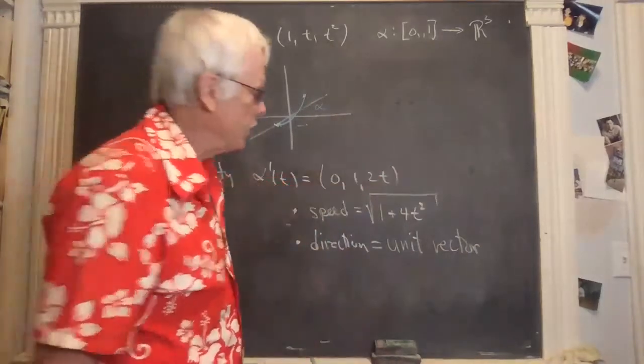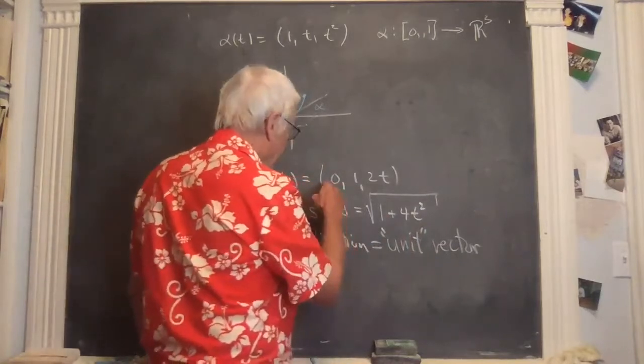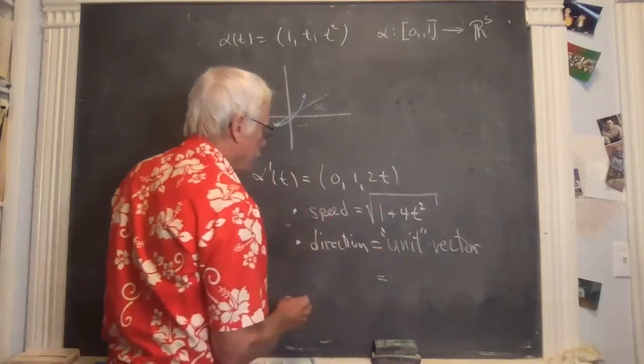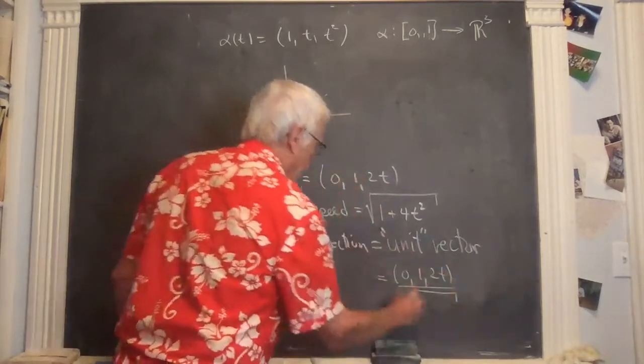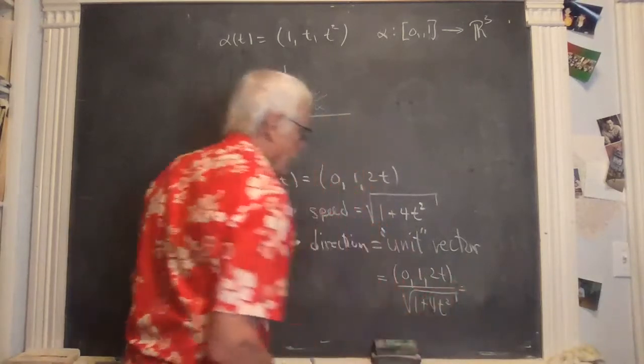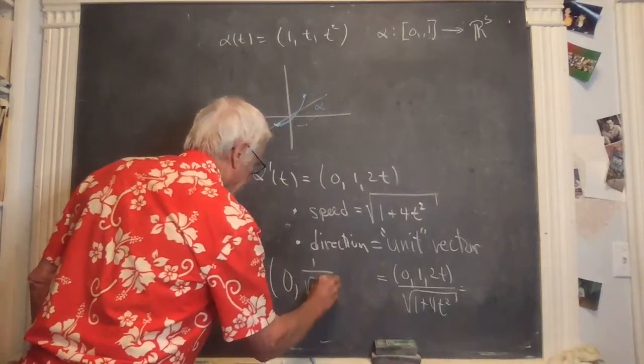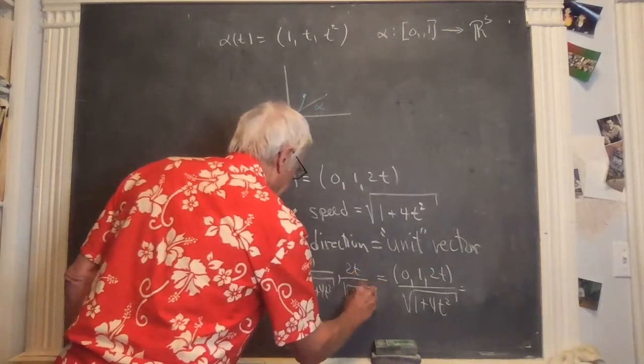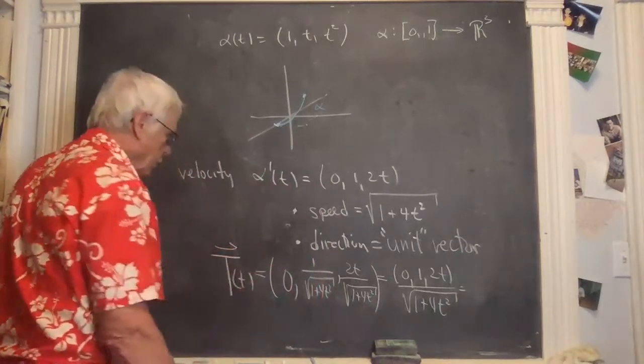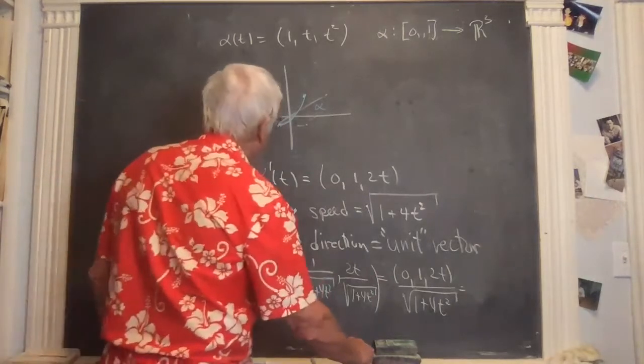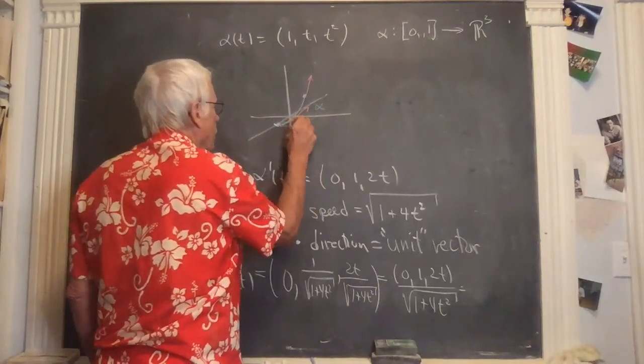But the technical word for direction right here is unit vector. And the unit vector in this direction at any time t is the vector divided by its length. So it's (0, 1, 2t) divided by its length. The length we already found is the speed. So this is the vector 0, 1 over the square root, and then 2t over the square root. And this vector is given a name T for tangent. And this vector T is a unit vector that points in the direction of the tangent line at any given point. So it's always of length 1.